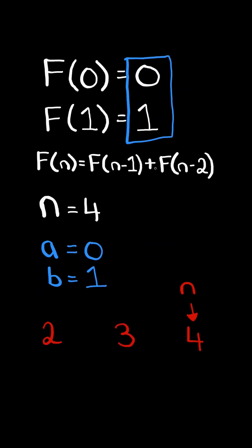We iterate from 2 through n, and we calculate the current Fibonacci number in the sequence. It equals the sum of the previous two numbers in the sequence, a and b.